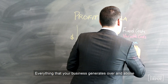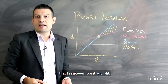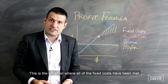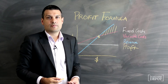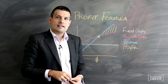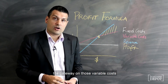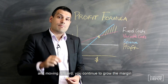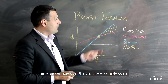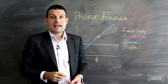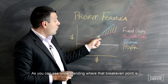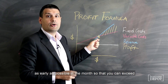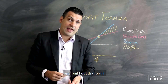Everything that your business generates over and above that break-even point is profit. This is the situation where all of the fixed costs have been met, where you have exceeded the gateway on those variable costs, and moving forward you continue to grow the margin as a percentage over the top of those variable costs. As you can see, understanding where that break-even point is gives you a specific target each month that you need to hit as early as possible so that you can exceed it and build out that profit.